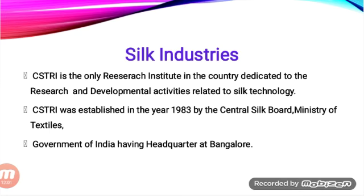Karnataka is the largest producer of silk — every year 8,200 metric tons of silk are produced in Karnataka, which is one third of India's total production. Other producers are West Bengal, Jammu and Kashmir, Bihar, Jharkhand, Uttarakhand, Uttar Pradesh, Punjab, Assam, and Tamil Nadu.